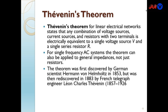Thevenin's theorem for linear electrical networks states that any combination of voltage sources, current sources, and resistors with two terminals is electrically equivalent to a single voltage source V_Thevenin and a single series resistor R_Thevenin. For a single-frequency AC system, the theorem can also be applied to general impedances, not just resistors. The theorem was first discovered by German scientist Hermann von Helmholtz in 1853 and rediscovered in 1883 by French telegraph engineer Léon Charles Thévenin (1857–1926).